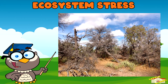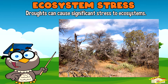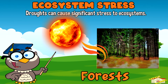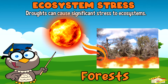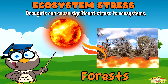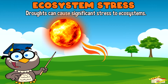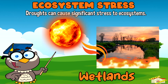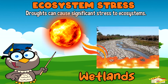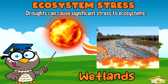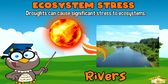Ecosystem stress. Droughts can cause significant stress to ecosystems, including forests, wetlands, and rivers.